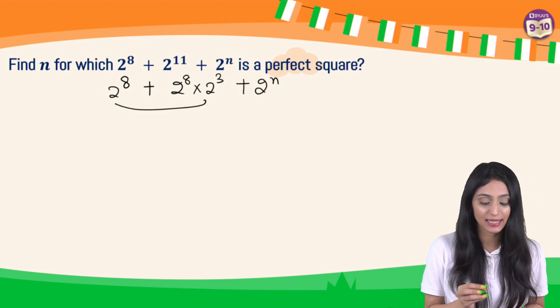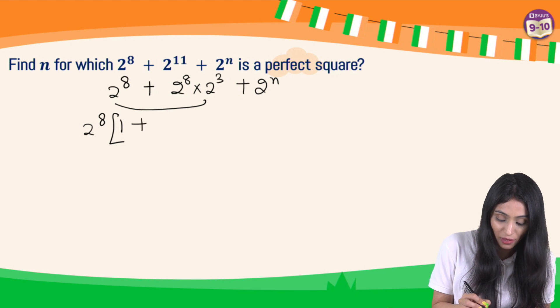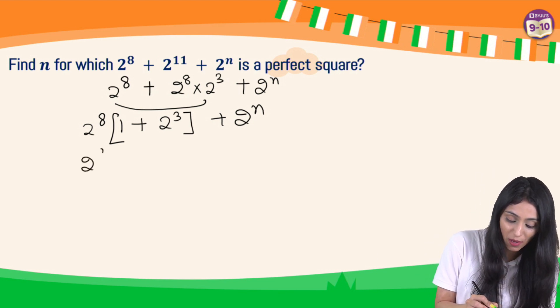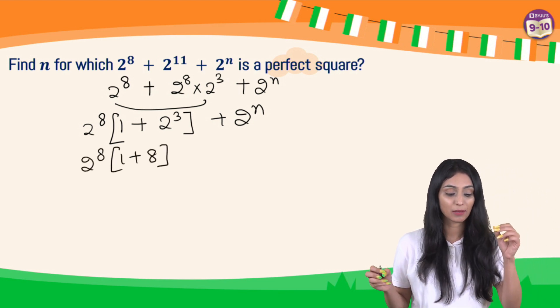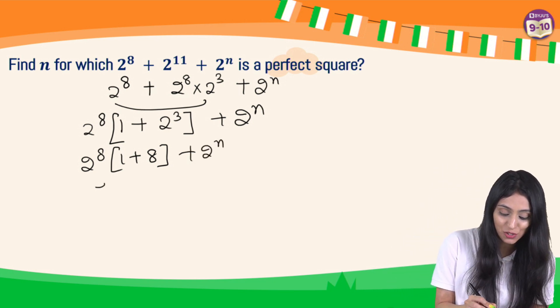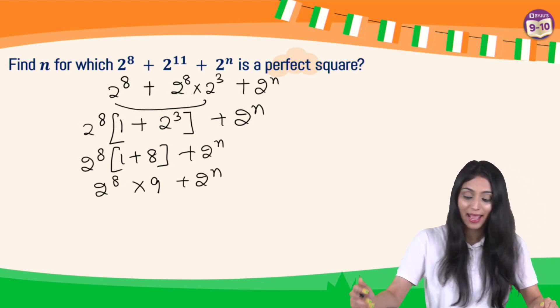Now from here, if I take common, I'll get 2 to the power 8, bracket, here we have 1 and here it's going to be 2 to the power 3 plus 2 to the power n. So this is 2 to the power 8, 1 plus 8 - I'm sorry, 2 to the power 3 is 8 basically - plus 2 to the power n. So this is 2 to the power 8 into 9 plus 2 to the power n.